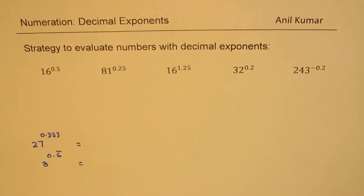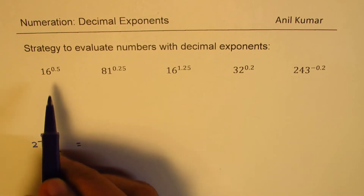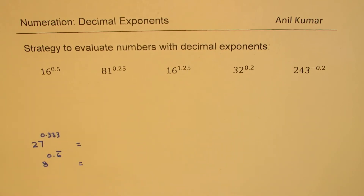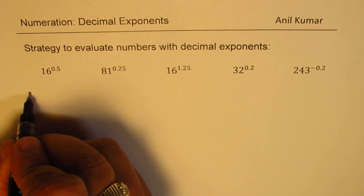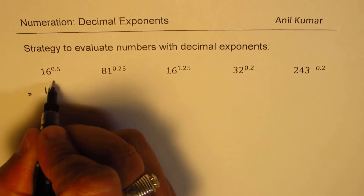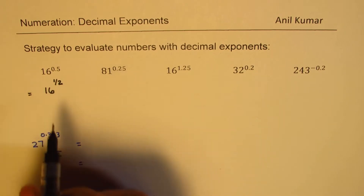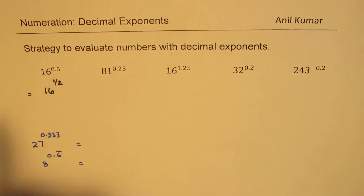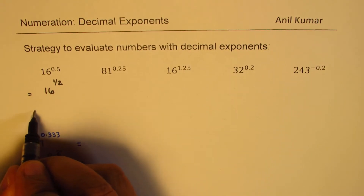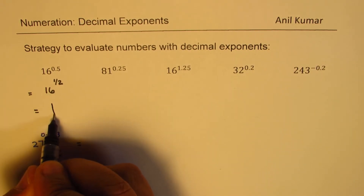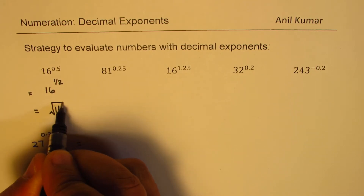Let's begin with the very first one, which is 16 to the power of 0.5. The first step when you have decimal numbers is to write it as a fraction. So 0.5 can be written as one half. So it is 16 to the power of one half, which means we're talking about the square root of 16.